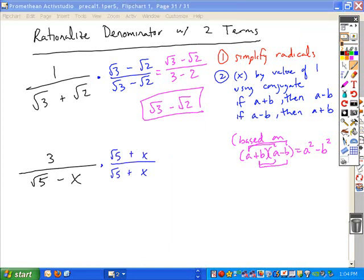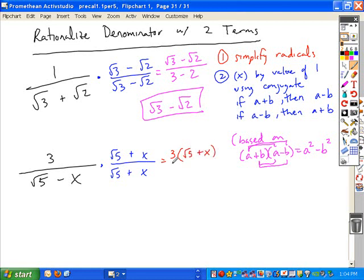When we do that, we get across the top, always leave the top as factors. There's no reason to expand it out. That's a source for a lot of mistakes that students make. Leave it as three times root five plus x. When we simplify the denominator, we square the first term. Root five times root five is just the base five, always a minus in between these, and then we square the last term, x squared. This would be our rationalized form. We've gotten rid of all the radicals from the denominator.